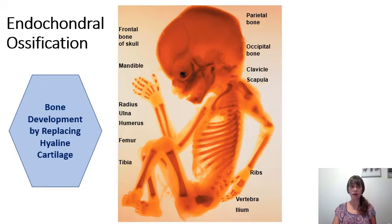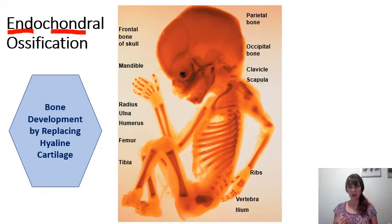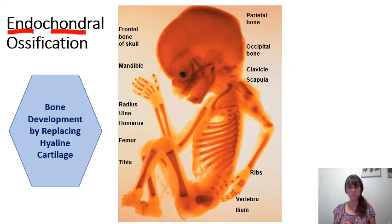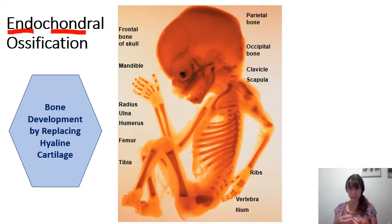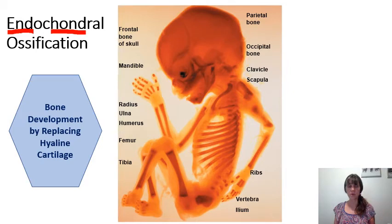Endochondral ossification is the other type of ossification process. 'Endo' means inside, 'chondro' means cartilage — so this pertains to ossification inside cartilage. Endochondral ossification produces all of the other bones in the body not produced by intramembranous ossification. The template for endochondral ossification is hyaline cartilage — the most abundant type of cartilage in the human body. We start with a model of hyaline cartilage that is transformed into bone.